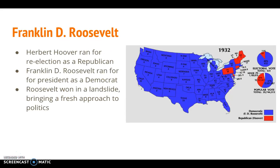With the nation's economy crumbling, the Democrats believed they had a good chance of winning the presidency. They met in Chicago and chose Franklin Delano Roosevelt as their Democratic candidate. Herbert Hoover was running for reelection as a Republican. By looking at this map, President Roosevelt ended up winning by a landslide, bringing a fresh approach to politics.